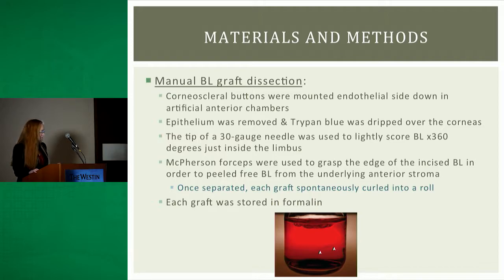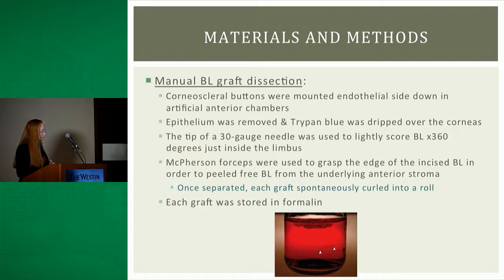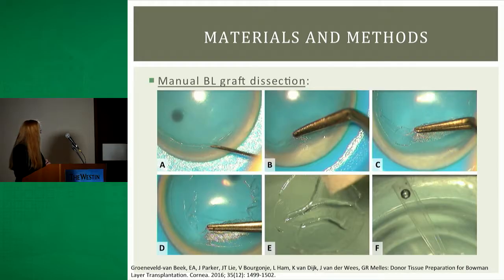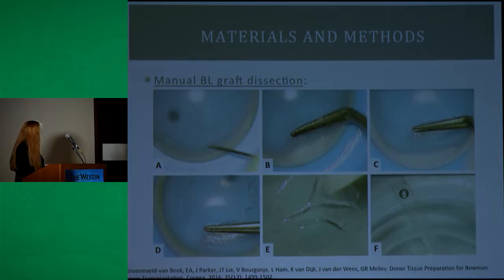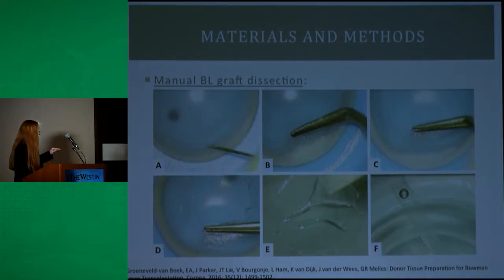McPherson forceps were used to grasp Bowman layer and very carefully free it from the underlying anterior stroma. You have the 30-gauge needle right inside the limbus just barely scoring it, the McPherson forceps grasping it, and then very slow, very delicate circular motions to lift it up until you get an isolated graft.